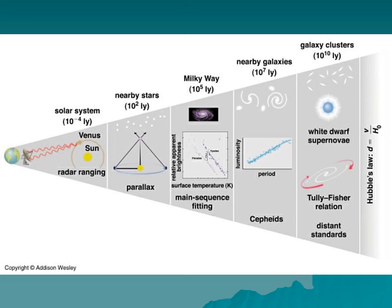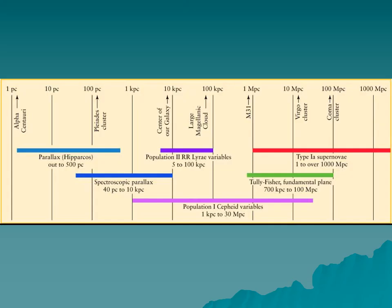The Tully-Fisher relationship lets you measure distances to galaxies too far away to see individual Cepheids. Beyond that, Type 1a supernovae are all the same brightness, so you can look at one in a very distant galaxy, know the absolute magnitude, measure the apparent magnitude, and find the distance - almost to the edge of the universe. This builds a distance ladder: radar gives us planetary distances and defines 1 AU, parallax gives distances to nearby stars, main sequence fitting works for star clusters, Cepheid variables extend further, then Tully-Fisher, then Type 1a supernovae. This whole system gives us the Hubble relationship.